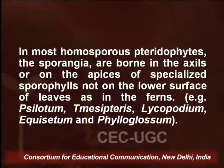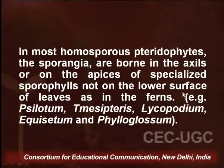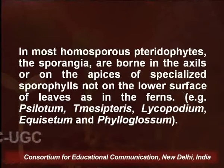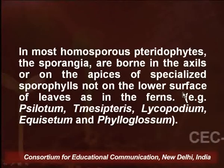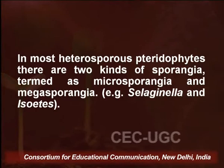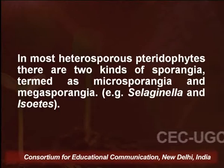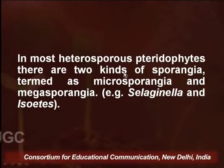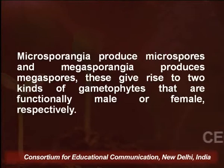In most homosporous pteridophytes, the sporangia are borne in the axils or on the apices of specialized sporophylls — not on the lower surface of the leaves as in ferns. Examples include Psilotum, Tmesipteris, Lycopodium, Equisetum, and Phylloglossum. In most heterosporous pteridophytes, there are two kinds of sporangia: microsporangia and megasporangia. Examples are Selaginella and Isoetes. The microsporangia produce microspores and the megasporangia produce megaspores.